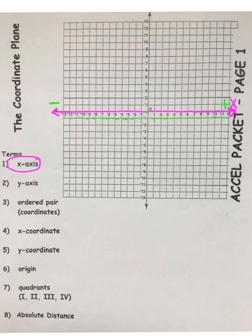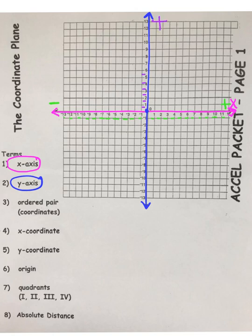Now let's move on and look at our y-axis. The y-axis runs north and south on our coordinate plane. You will notice that the values above the origin are positive, so we know if we're given a positive y-coordinate, we will move up. Please label this your y-axis with a y. Go back to the origin and notice below the origin these y-values are negative. And if you are given a negative y-value, you will move down the coordinate plane.